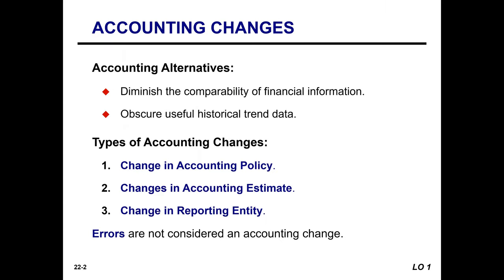When there are accounting changes, whether it's from changes in accounting principle or changes in accounting estimate, it diminishes the comparability of financial information. For example, if in 2019 we used FIFO, but then in 2020 we changed to LIFO, then we're not comparing apples to apples. It also obscures useful historical trend data, because all of our 2020 data would not be comparable to 2019 and prior data.